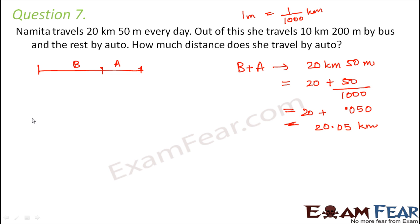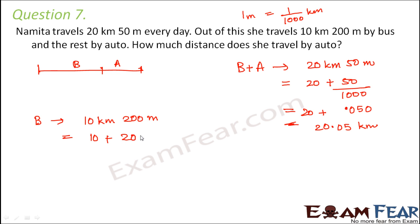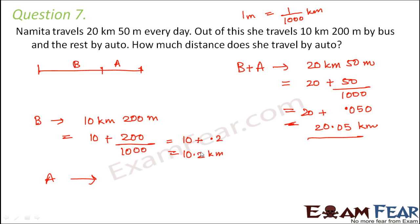The distance traveled by bus is 10 km 200 meters. Converting to kilometers: 10 plus 200/1000 equals 10 plus 0.2, which is 10.2 km. The distance by auto is total minus bus distance: 20.05 minus 10.2.